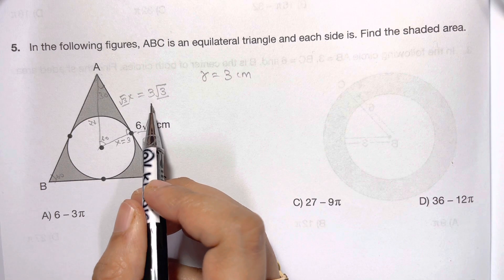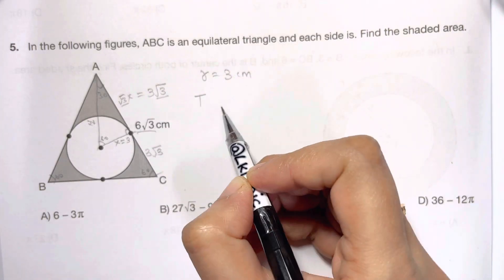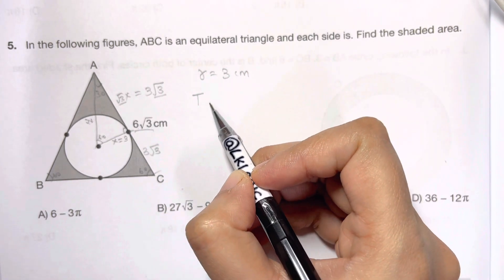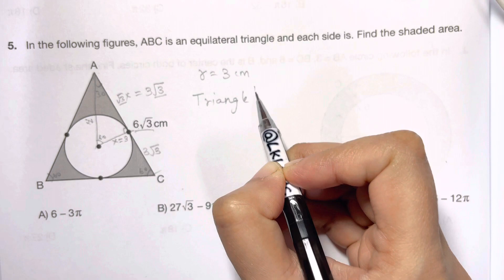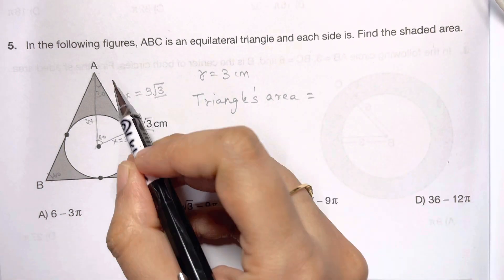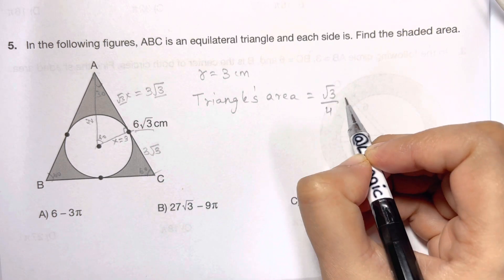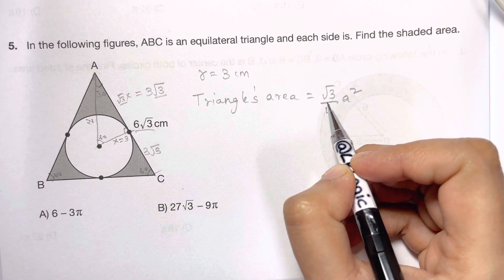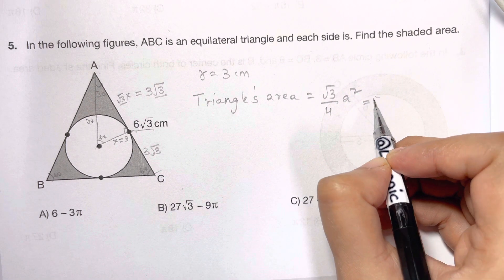Now let's find the area of the triangle. What is the triangle's area? Area of the triangle, as it is an equilateral triangle, so I'm going to take (√3/4)a².